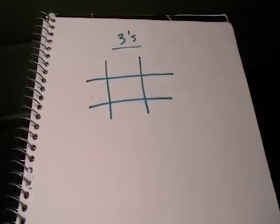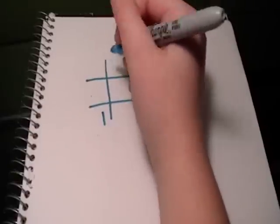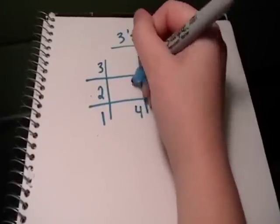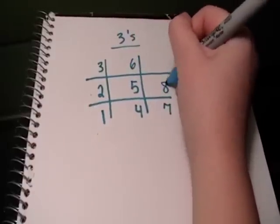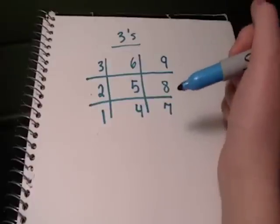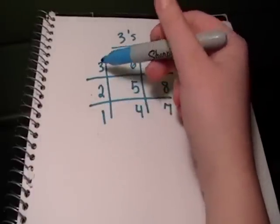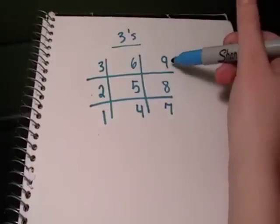Within this table, we will write the numbers 1 through 9. Notice which order I write the numbers. I went 1, 2, 3, 4, 5, 6, 7, 8, 9.